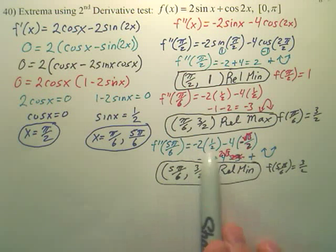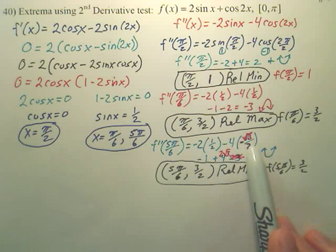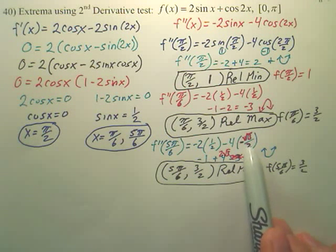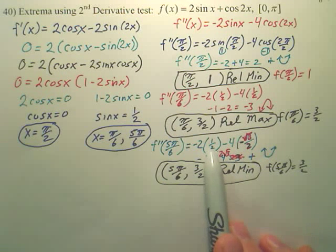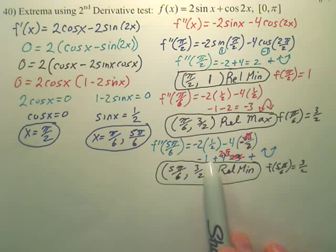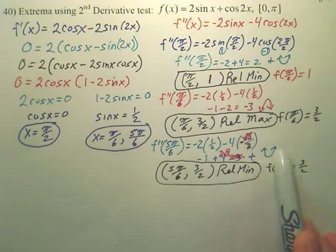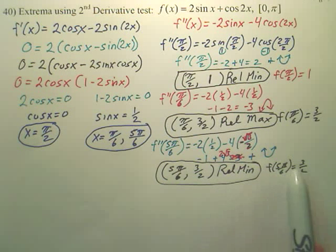Do the same for 5 pi over 6. There's a small arithmetic error here — cosine of 5 pi over 6 is negative square root of 3 over 2, not pi. When you work through the subtraction, you actually end up with a positive value, which means concave up, so it's a relative minimum. Find that coordinate by plugging 5 pi over 6 into the original function.